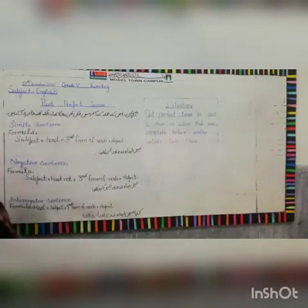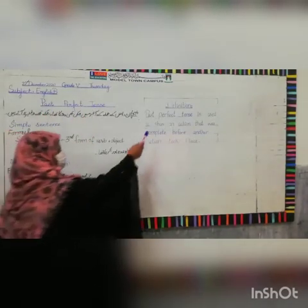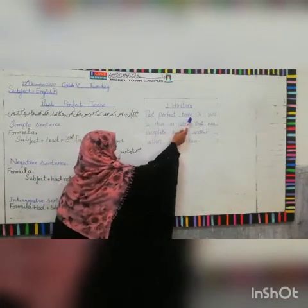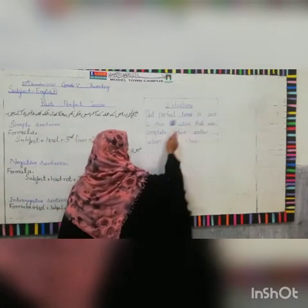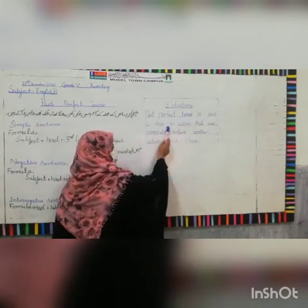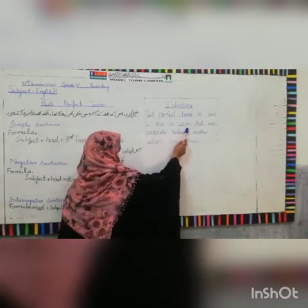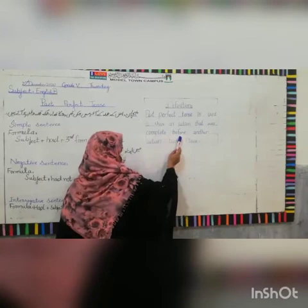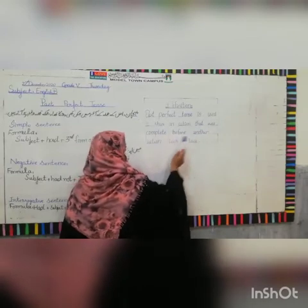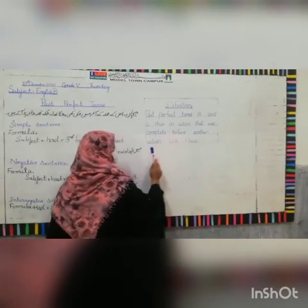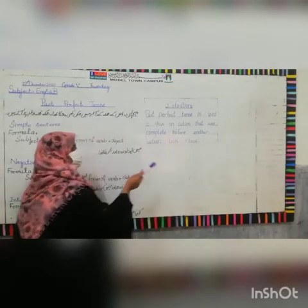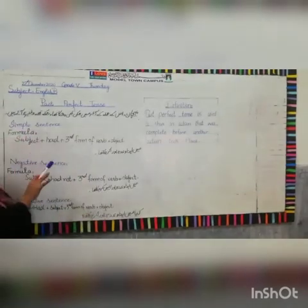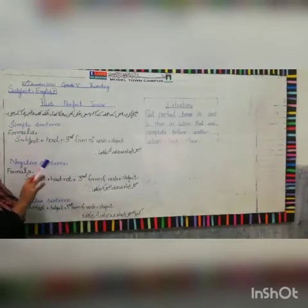The definition is: Past Perfect Tense is used to show an action that was completed before another action in the past. It will be a kind of work that will be done in the past.